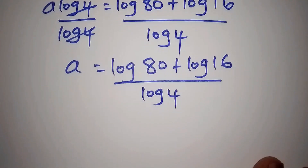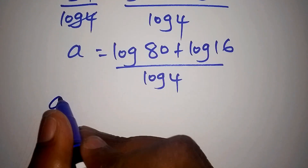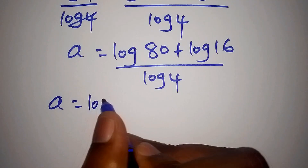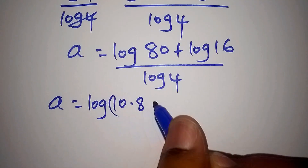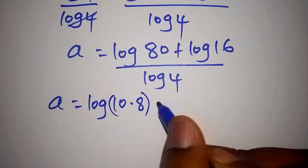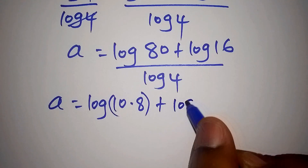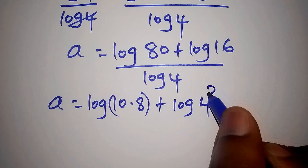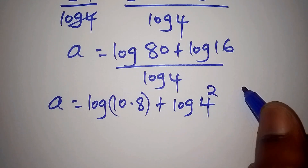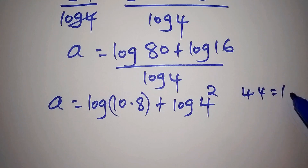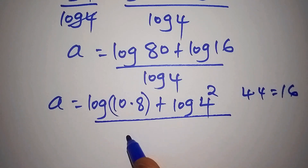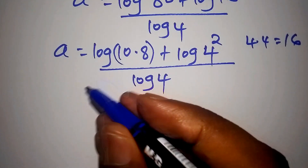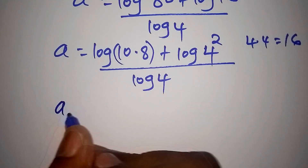Here, a equals log 80, which can be written as the log of 10 multiplied by 8, plus log 16, which can be written as the log of 4 to the power of 2 — since 4 times 4 equals 16 — all over the log of 4. And log 10 can be written as the log of 5 multiplied by 2.